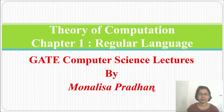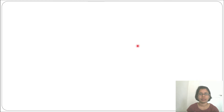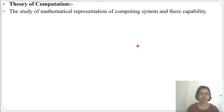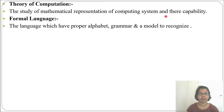Let's start Theory of Computation, Chapter 1: Regular Language. In this chapter I will cover regular language, finite automata, regular expression, regular grammar, and pumping lemma. The study of mathematical implementation of computing systems and their capability is called Theory of Computation. We'll do some mathematical representation of computing systems. Next is formal language: the language which has a proper alphabet, grammar, and a model to recognize it is called a formal language.